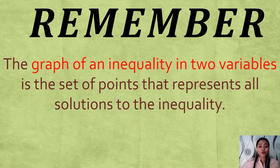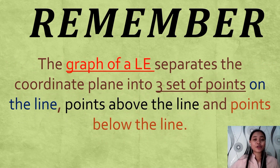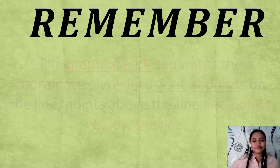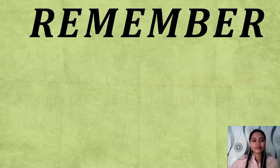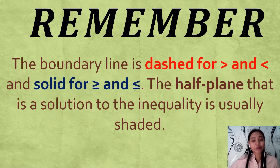If the inequality uses less than or equal to, or greater than or equal to, the boundary line is part of the graph and is drawn as a solid line. This is called a closed half-plane. The graph of an inequality in two variables is the set of points that represents all solutions to the inequality. A linear inequality divides the coordinate plane into two halves by a boundary line, where one half represents the solutions.